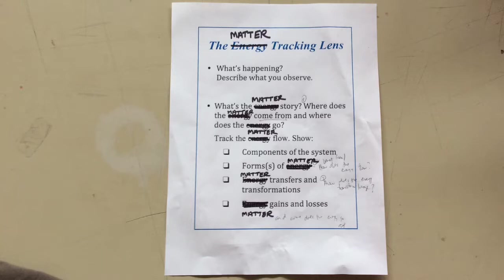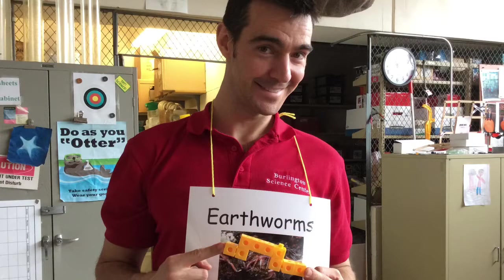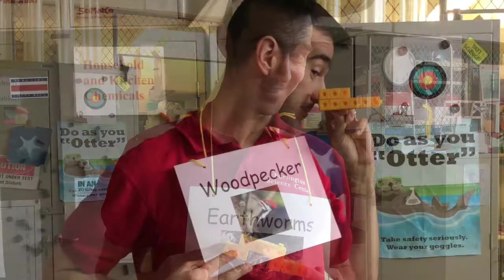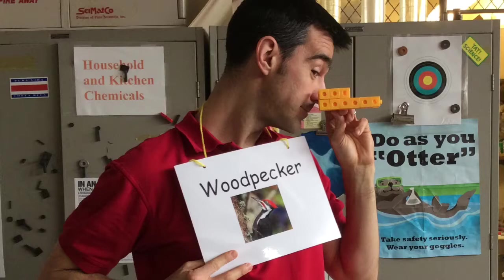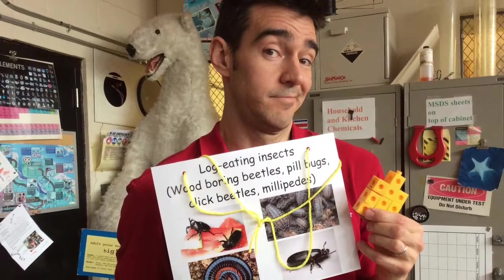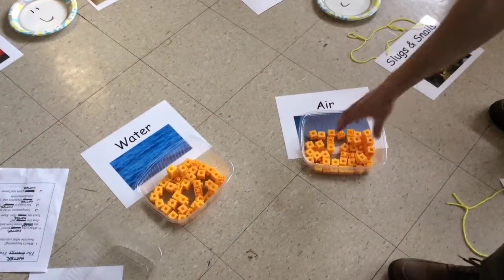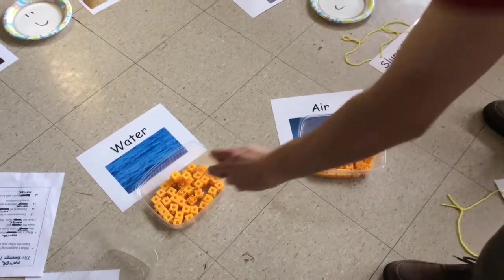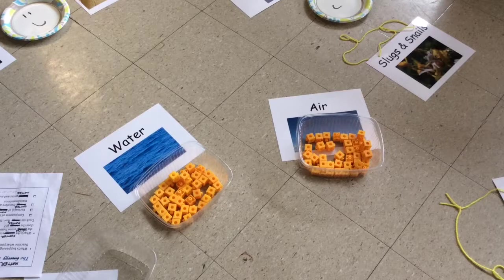As your class works through modeling the flow of matter through different components of the ecosystem, you'll want students to break down their models when they are consumed by other organisms, so those organisms can use those same cubes to recreate parts of their own organism — an antenna, a leg, or any other piece. Also note that not all matter an organism takes in comes exclusively from the creature eaten; organisms also drink water and breathe in air, which can be emphasized when discussing matter gains and losses.